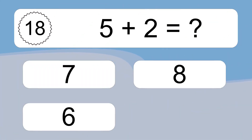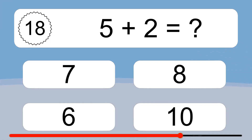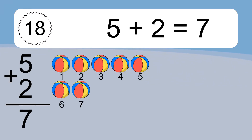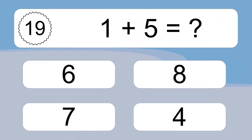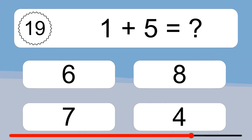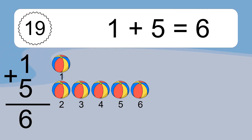5 plus 2 equals what? 8 plus 5 equals what? 8 plus 5 equals 7. Let's count it: 1, 2, 3, 4, 5, 6, 7. 8 plus 5 equals 6. Let's count it: 1, 2, 3, 4, 5, 6.